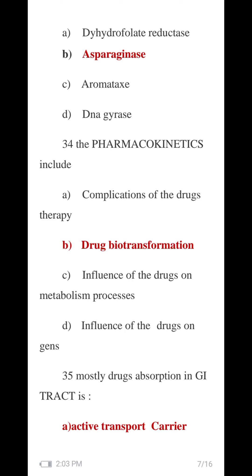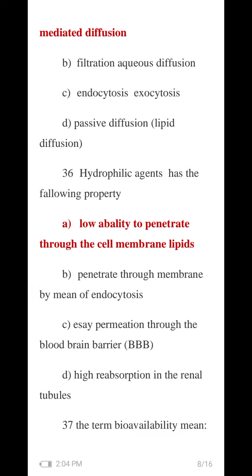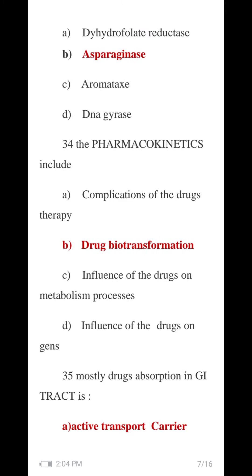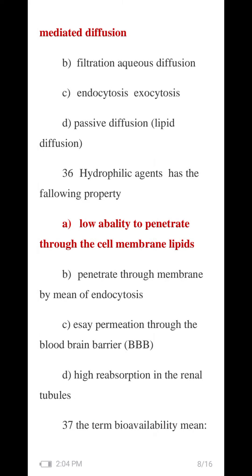Question 35: Most drug absorption in the GI tract — the gastrointestinal tract. The process is called passive diffusion or active transport carrier-mediated. The A number option — active transport carrier-mediated — is correct. Diffusion options B, C, D include lipid diffusion, endocytosis, exocytosis, bulk filtration, and aqueous diffusion.